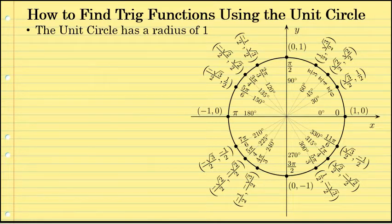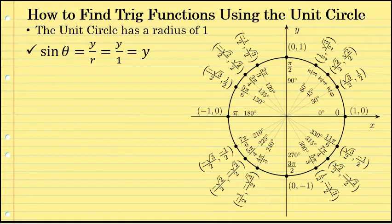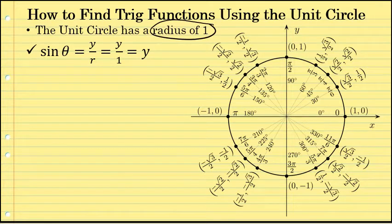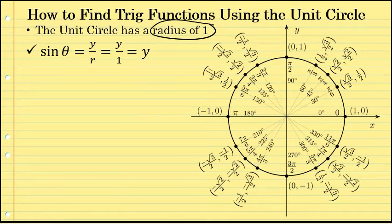Let's briefly review the ratios for the six trig functions. The sine ratio is y over r, and on the unit circle the radius is one, so y over r will be y over one for any angle on the unit circle, which is just y. The sine of any angle on the unit circle is simply its associated y-coordinate.